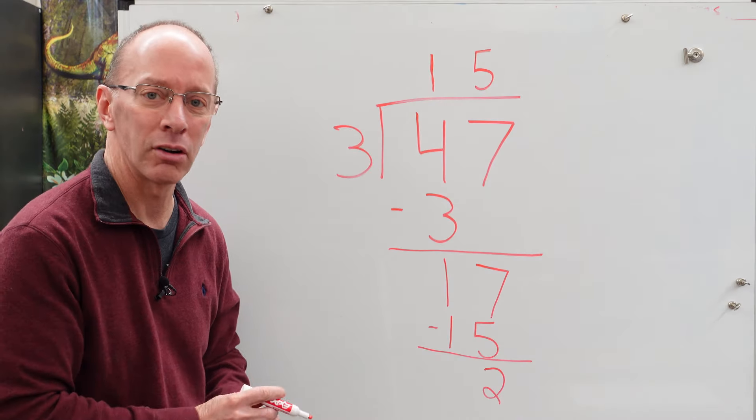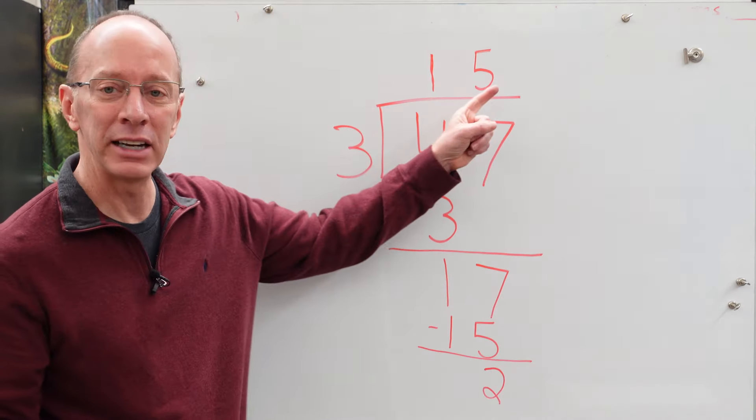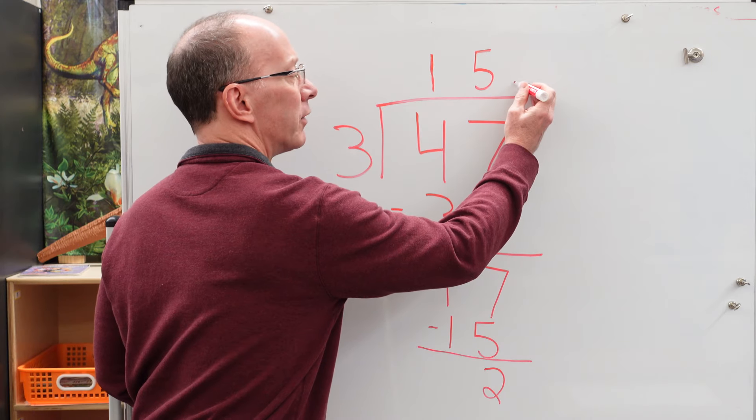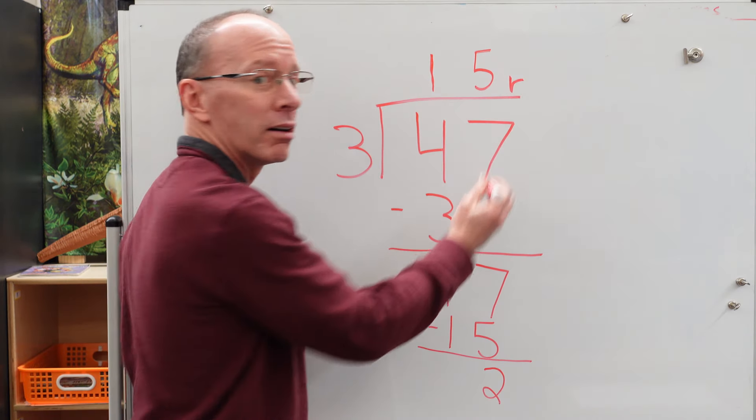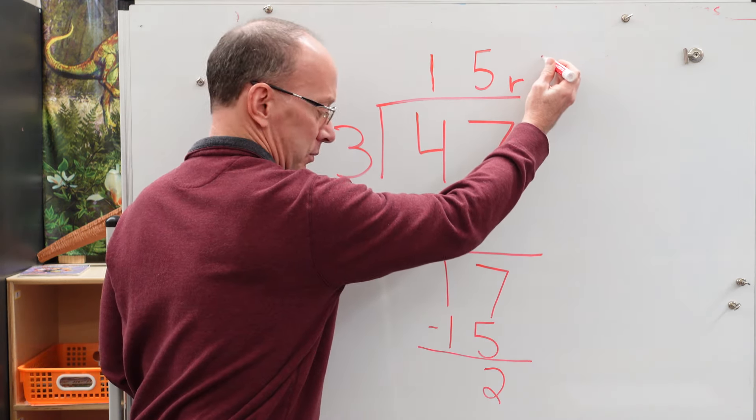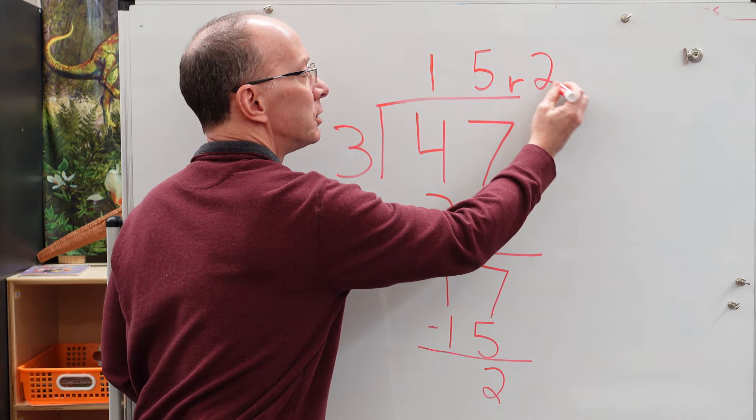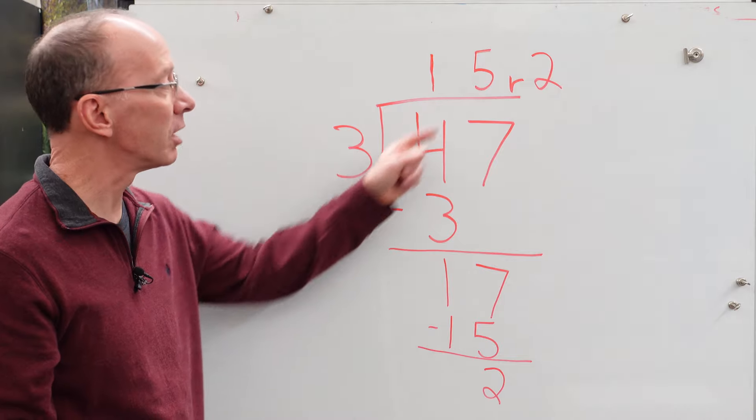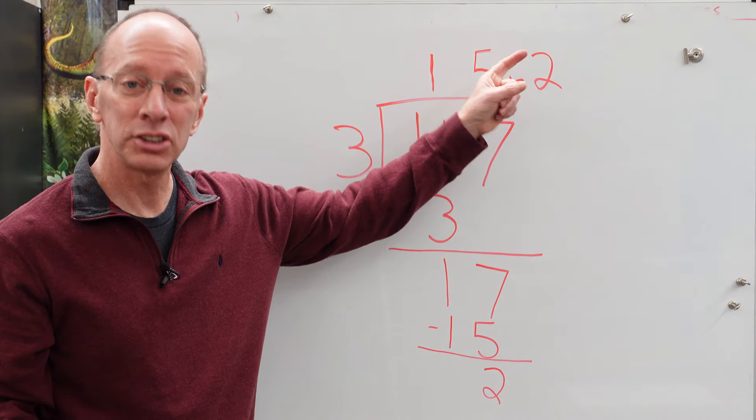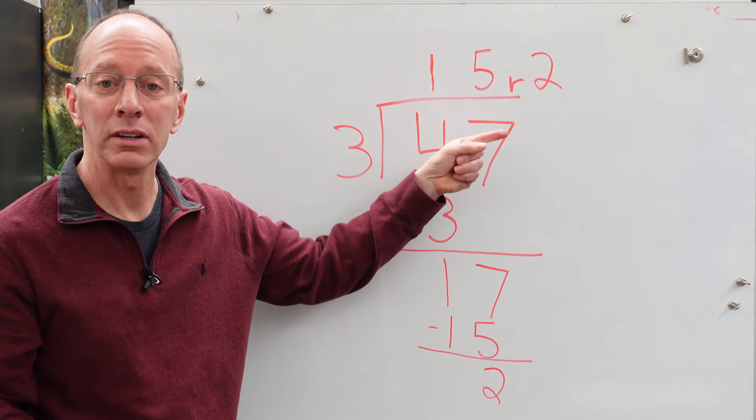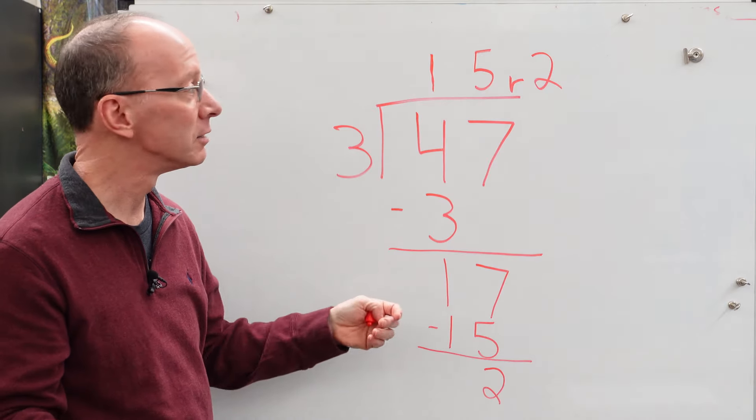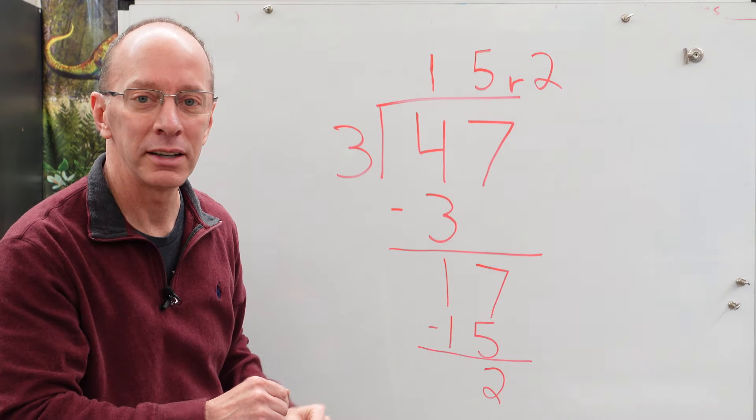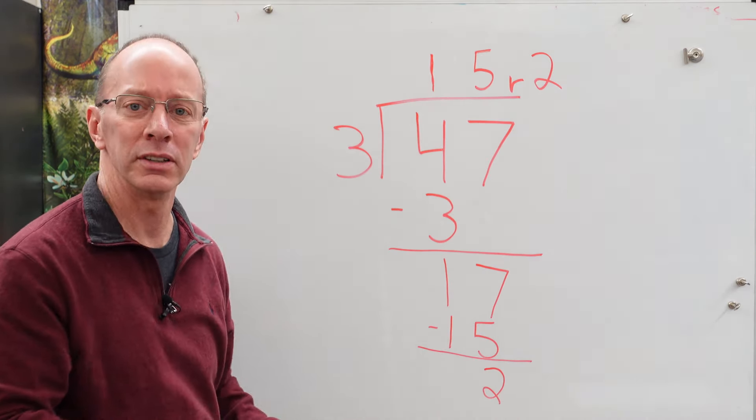That two is what is called a remainder. And we put our remainder up here. So we show our remainder with an r, small r. And then we have the remainder of two. What this means is we have three groups of 15 with two extra leftover. So maybe it is cookies. So you can always give those extra cookies to me. Hey, ready to try another one? Let's do another one.